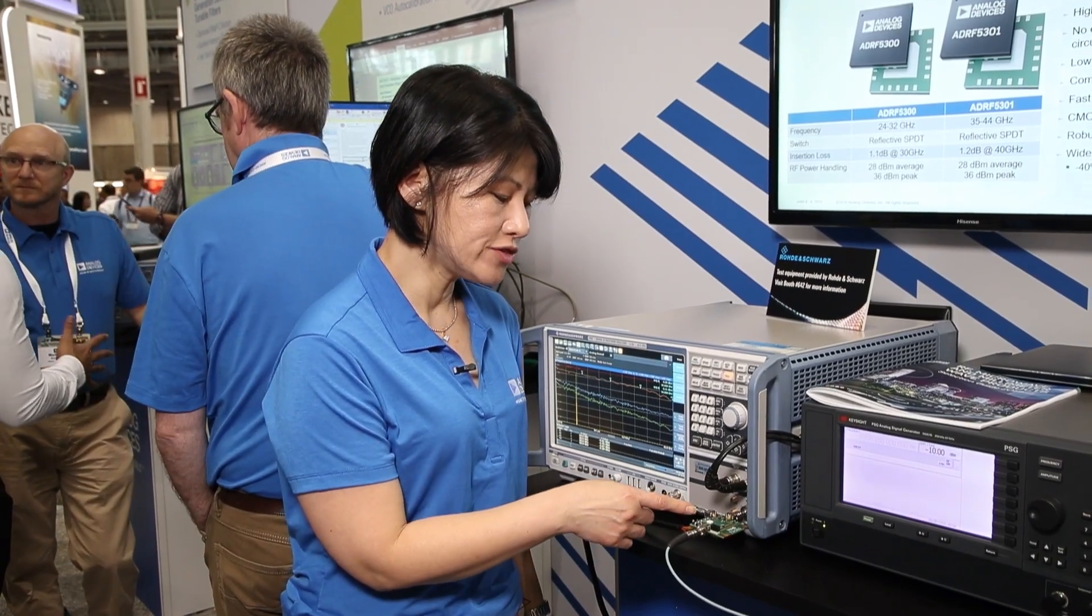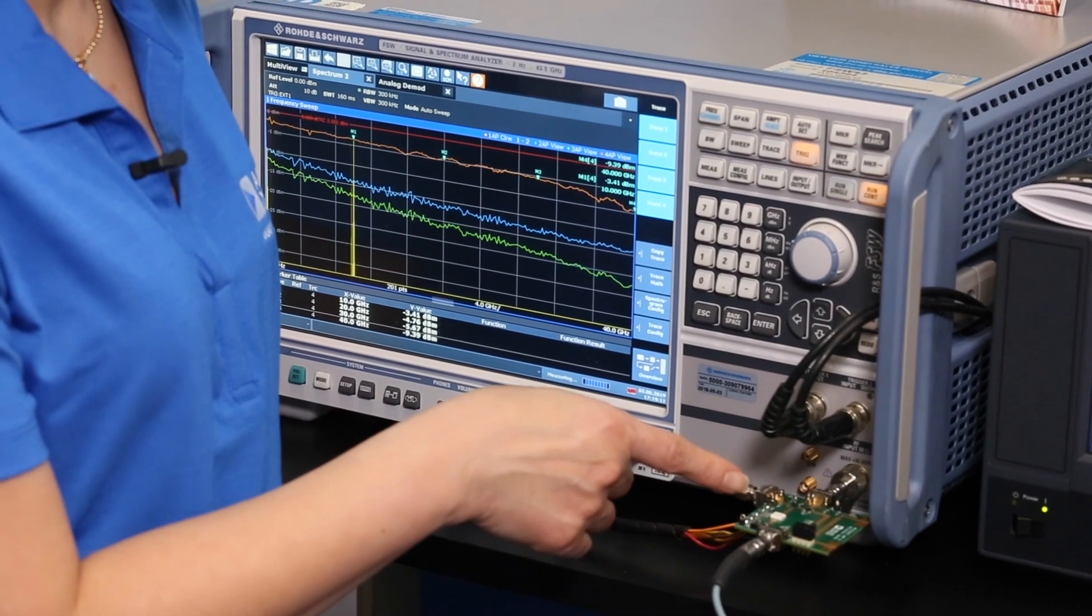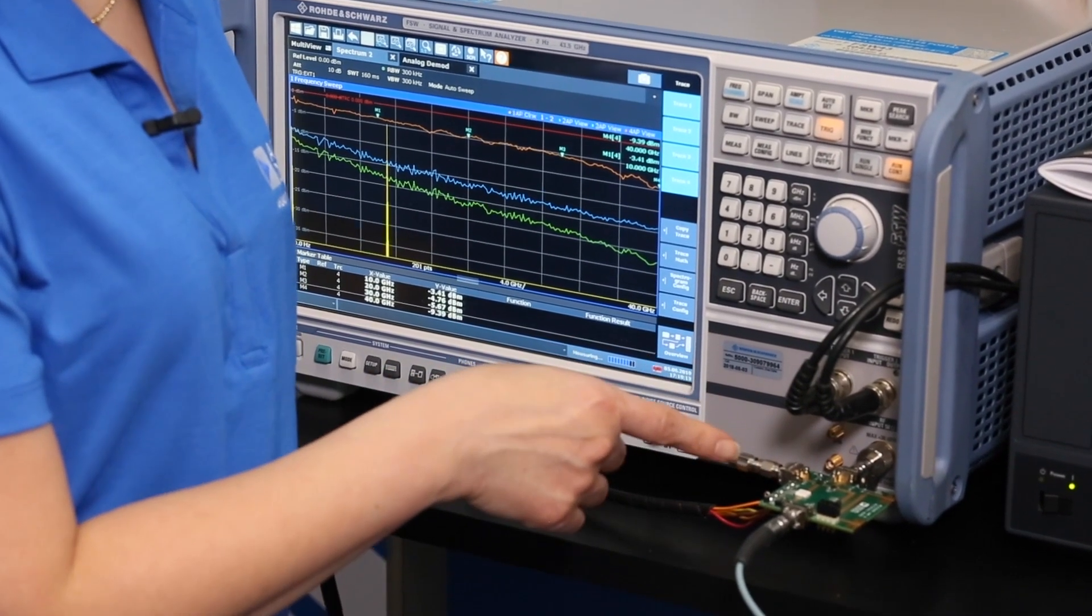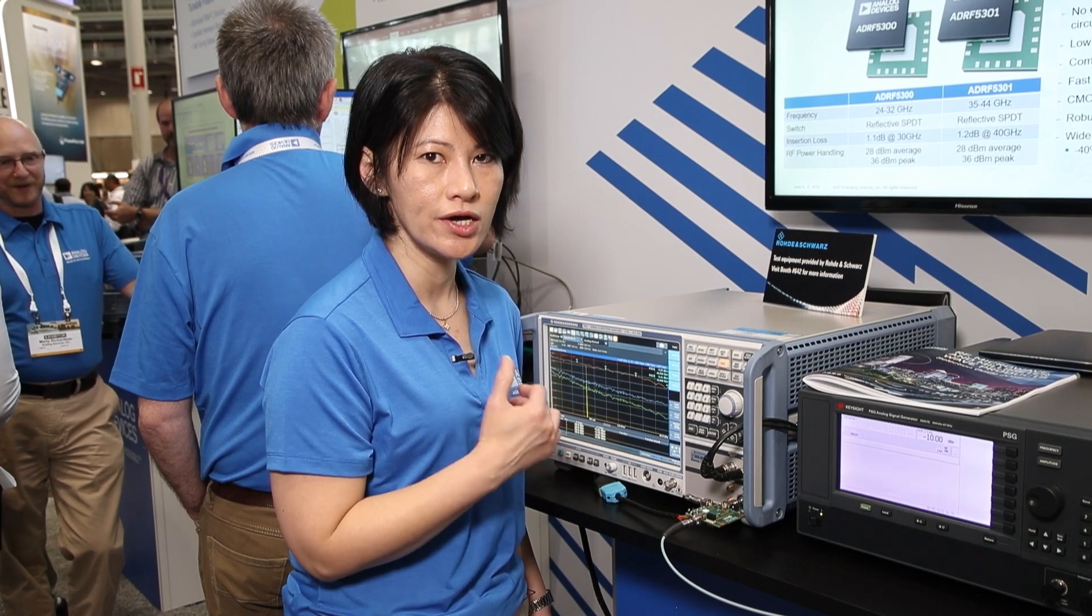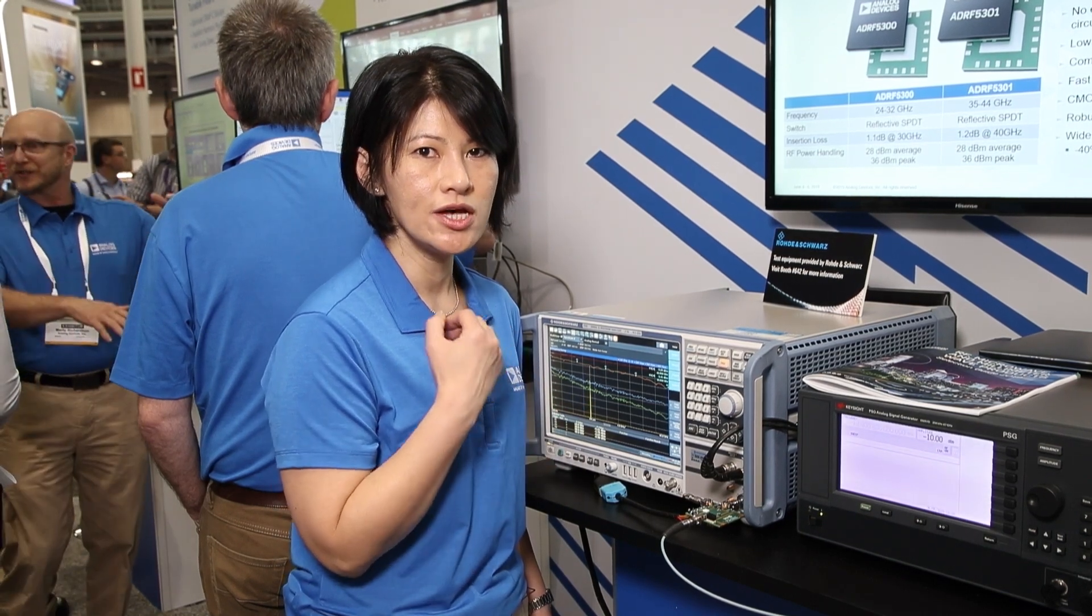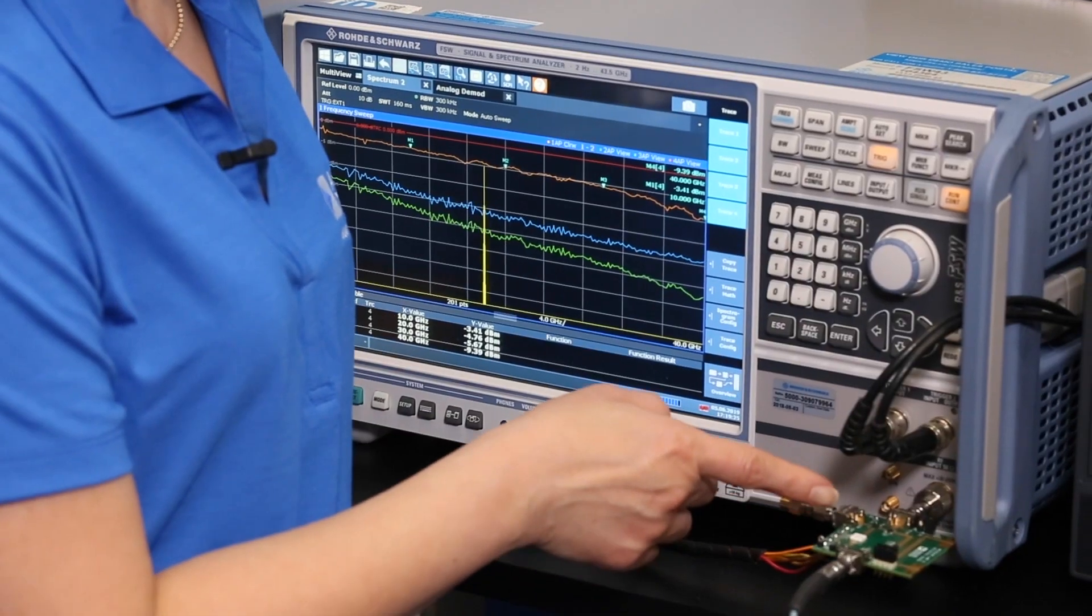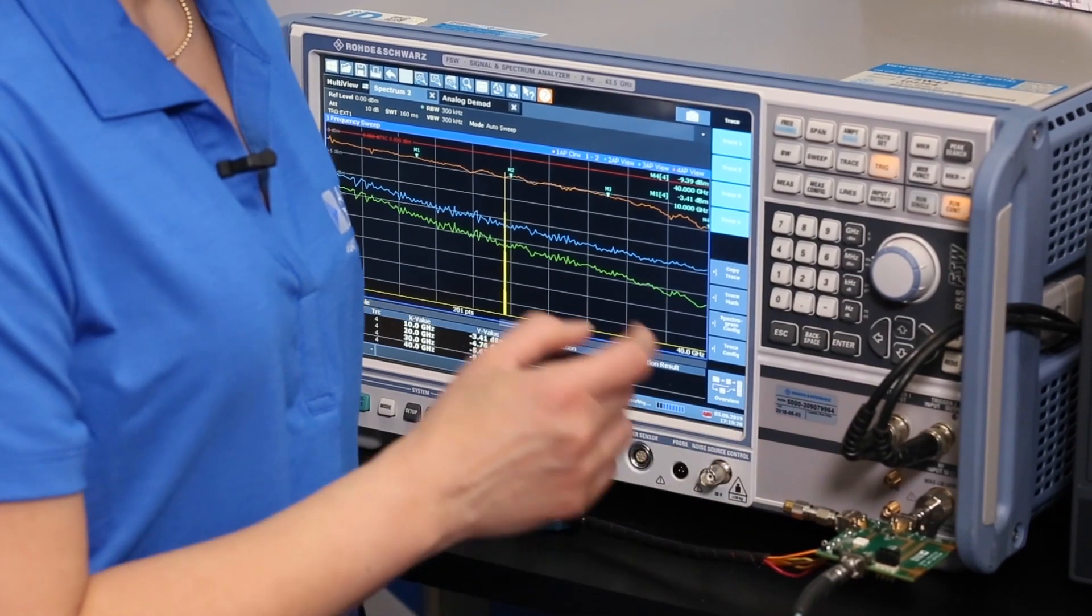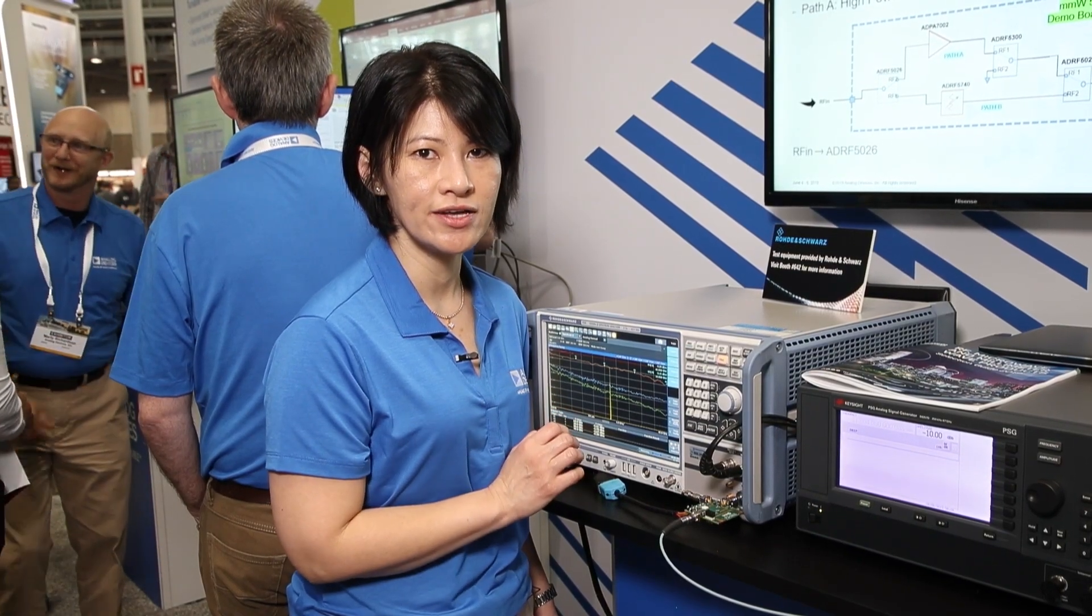So on the first path, we have 27 dBm at 28 gigahertz applied into the ADRF 5300. That demonstrates the hot switching power capability by toggling the SBDT switch between states, and the RF output settles to within 0.1 dB of accuracy within 50 nanoseconds.